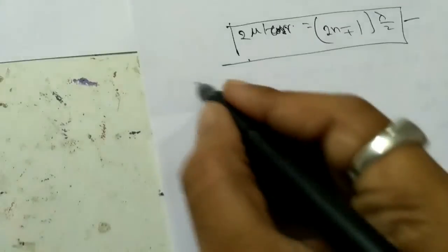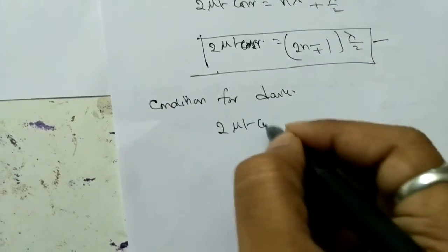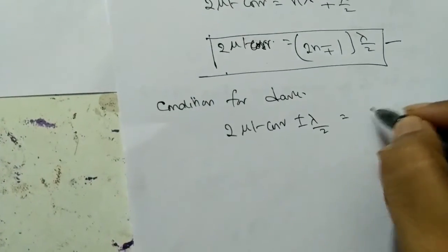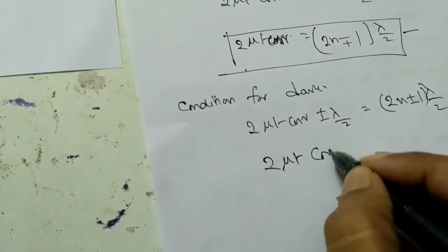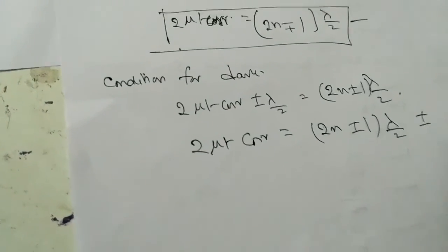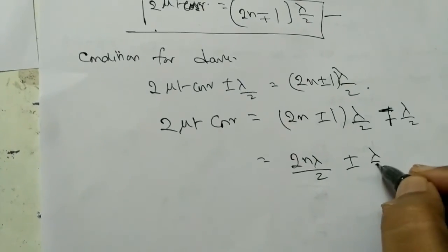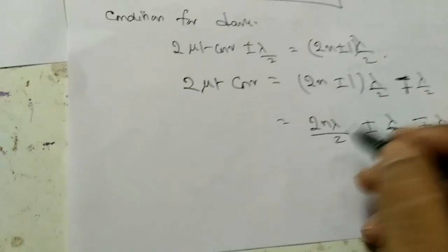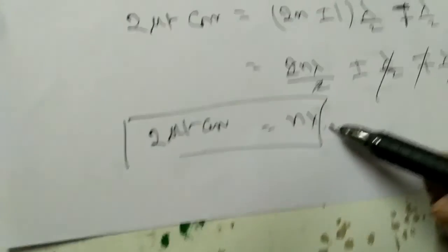For the condition for dark fringes: 2μt·cos r ± λ/2 equals odd multiples of λ/2, that is (2n ± 1)·λ/2. Simplifying, 2μt·cos r = nλ. This gives the condition for dark fringes. At the bright fringe condition, bright fringes are formed; at the dark fringe condition, dark fringes are formed.